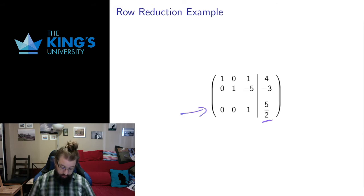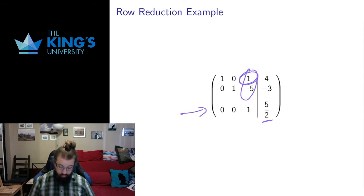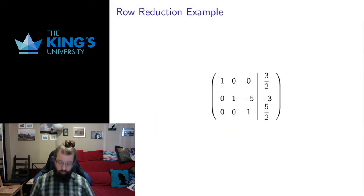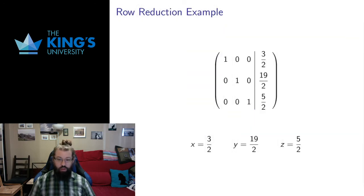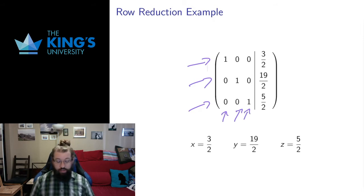I divide the entire third row by negative 6. Negative 15 over negative 6 is the same as 5 halves. Now the third row has a leading one and I want to clear the column. I'll do them one at a time — first I'll subtract the third row from the first row. Subtracting 1 clears that entry; 4 minus 5 halves is 8 halves minus 5 halves, which gives 3 halves. Then I need to clear the negative 5 below: I add 5 times the third row to the second row. That gives negative 3 plus 5 times 5 halves, which is 19 halves. Now I've got my leading 1s, and each leading 1 is in a column where everything else is 0s — this is reduced row echelon form.